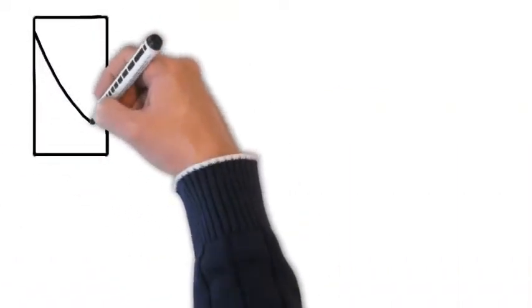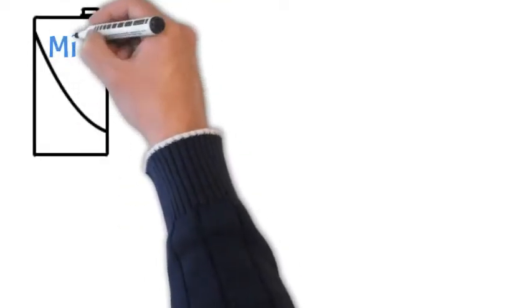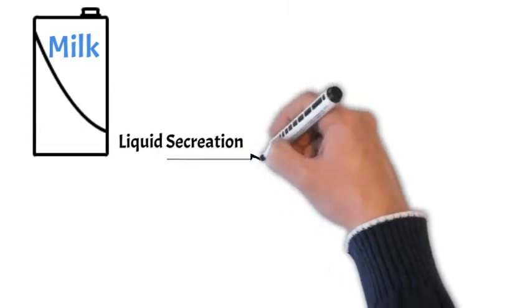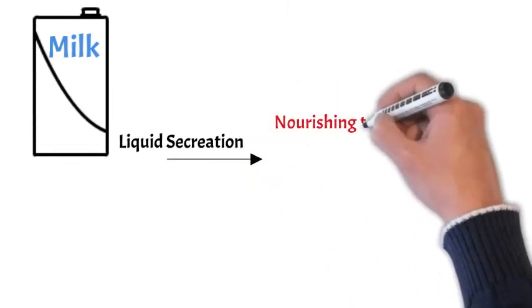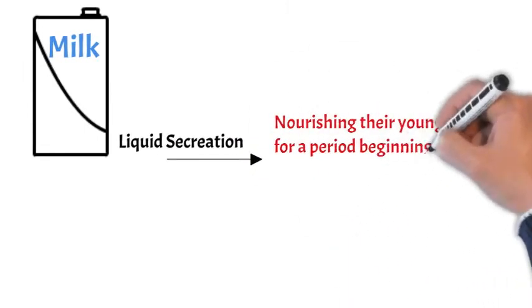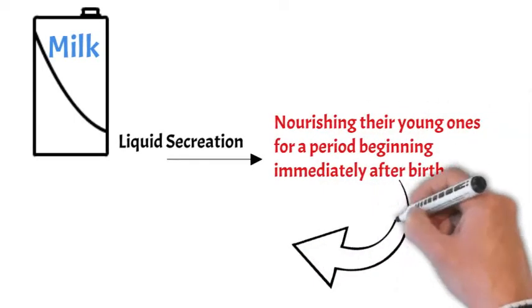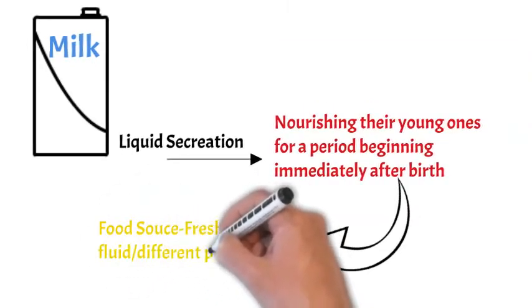Milk is a liquid secreted by the mammary glands of female mammals to nourish their young ones for a period beginning immediately after birth. Milk is an important source of food. It could be in the form of fluid or different processed forms.